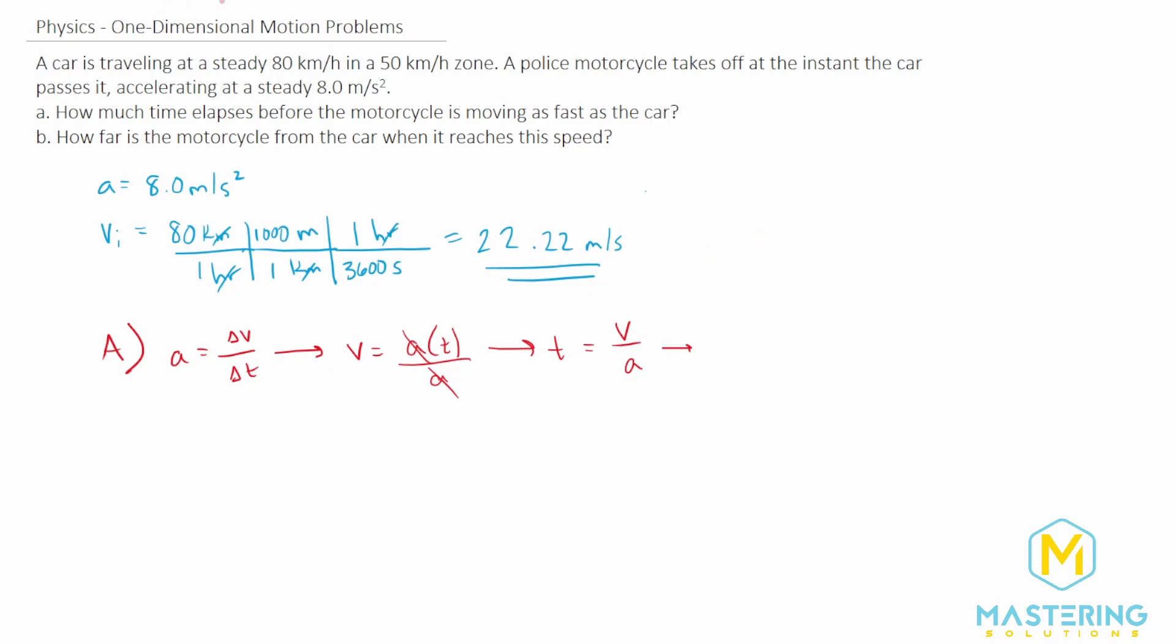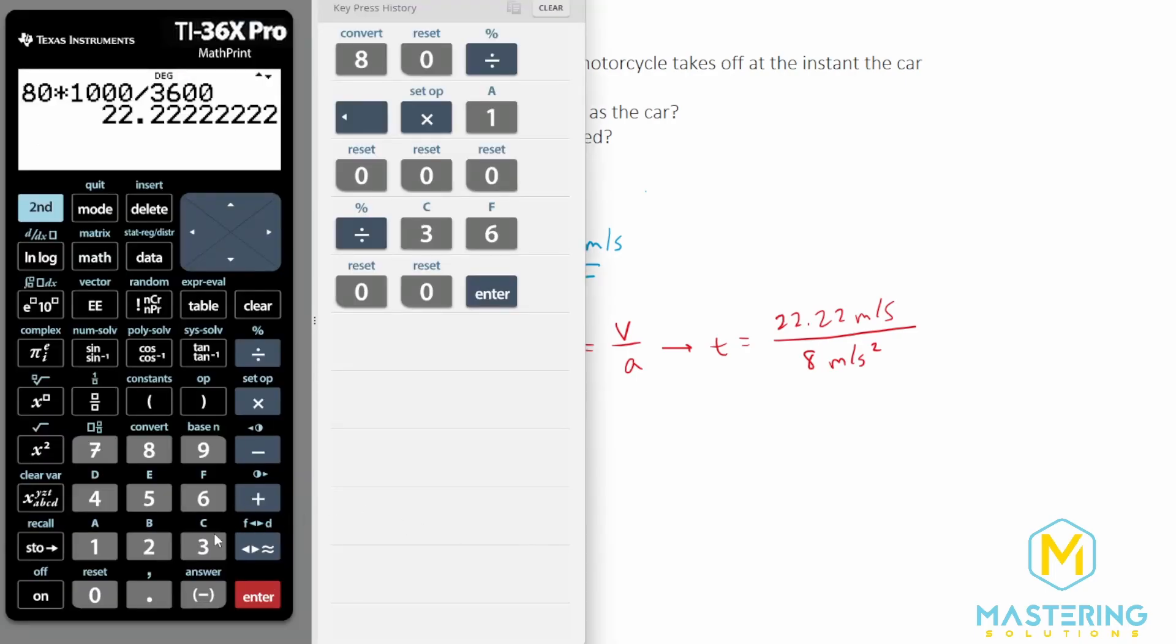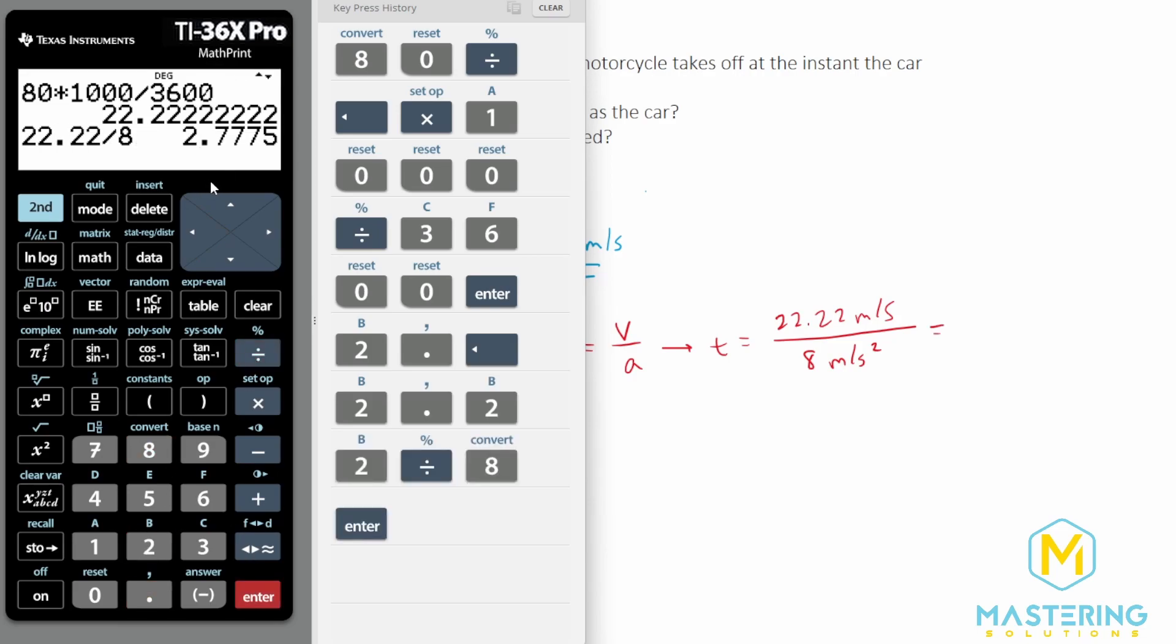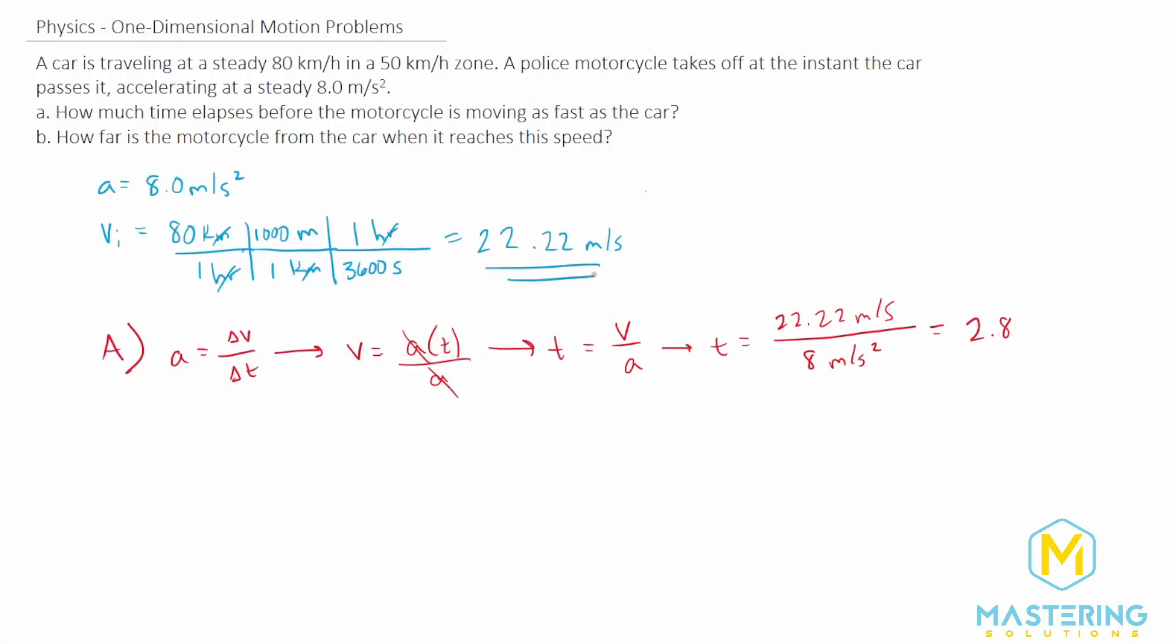Now to figure out the time, let's plug in our numbers. Time equals the velocity, which we just found was 22.22 meters per second, and the acceleration is 8 meters per second squared. 22.22 divided by 8 gives us 2.78, which we round to 2.8 seconds. That is how long it took for the motorcycle to catch up to the same speed as the car. It hasn't caught up to the car yet, that's just how long it took to reach 80 kilometers per hour or 22 meters per second.